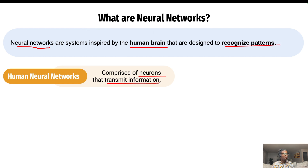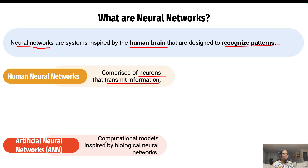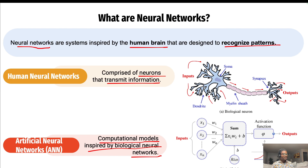For the human neural network, we have neurons that transmit information. We have a lot of neurons in our brain and they need to communicate with each other. For artificial neural networks, we have computational models inspired by biological neural networks. Looking at the diagram, this is one neuron in your brain — an average human being has billions of neurons. The structure of a neuron includes the dendrites, which is what a neuron uses to get information from another neuron.